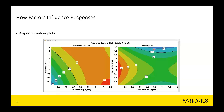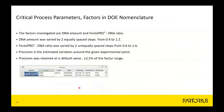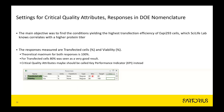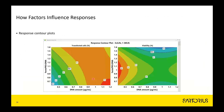Response contour plots are easier to interpret. On the left is the plot for transfected cells and on the right is the plot for viability, showing how these two responses are predicted to change when the ratio of Factor Pro to DNA and the DNA amount are varied. The minimum specification levels are emphasized with thicker lines: transfected cells should be above 60 and viability above 80. Highest viability appears in the left-hand part while highest transfected cells is in a different region — they are conflicting.